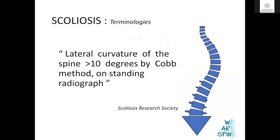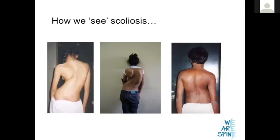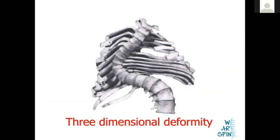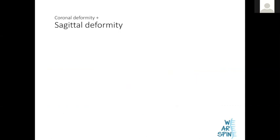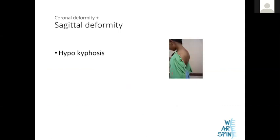Scoliosis has been defined by the Scoliosis Research Society as a lateral curvature of the spine of more than 10 degrees. As surgeons, you will see scoliosis as the hunchback of Notre Dame. But in truth, it's actually a three-dimensional deformity — not a single plane curve, but a curve in three planes.